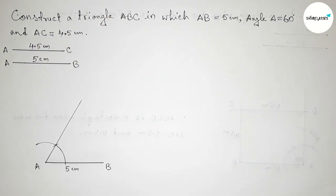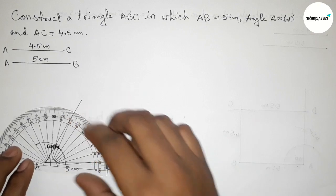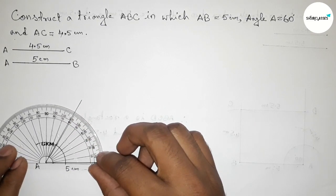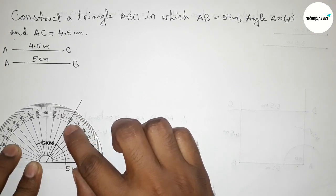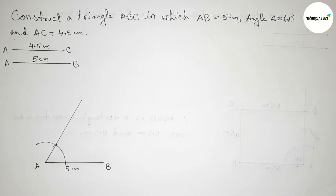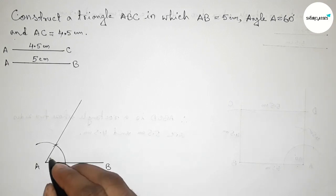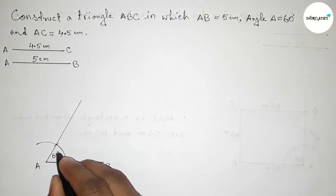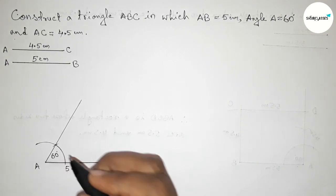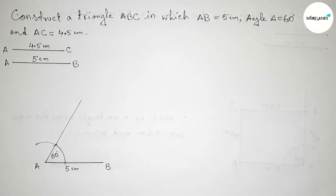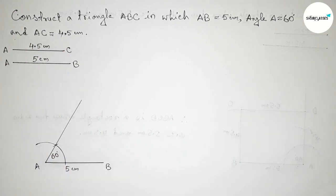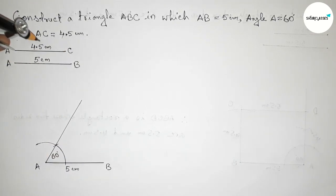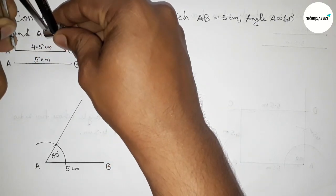Next, checking this angle with the help of a protractor. Putting the protractor perfectly — this is a 60 degree angle. So angle A equals 60 degree.